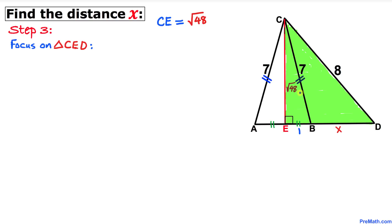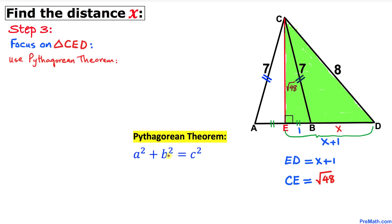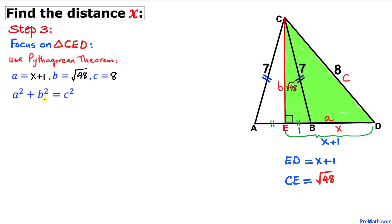Now let's focus on triangle CED. Side length ED equals the sum of 1 plus X, so ED equals x plus 1. Triangle CED is a right triangle, so we use the Pythagorean theorem again: A squared plus B squared equals C squared. The horizontal side is labeled lowercase a, the vertical side lowercase b, and the longest leg c. Here A equals x plus 1, B equals square root of 48, and C equals 8.